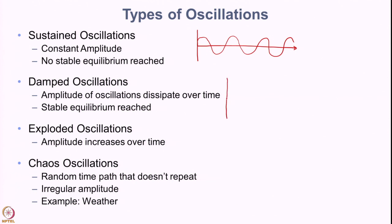We can also have damped oscillations, where the amplitude dissipates over time and a stable equilibrium is reached. The behavior looks like this — over a long period the system converges to some steady state or stable equilibrium value.